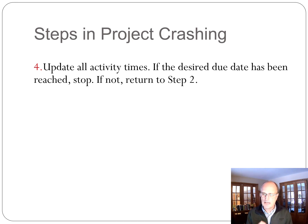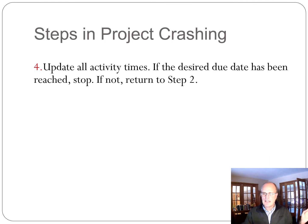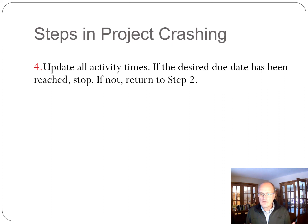The last point: sometimes students struggle with the concept that you need to shorten two activities because there are two different critical paths, yet the whole project only shortens by one day. You shorten this activity by a day and that activity by a day, but it still only shortens the project by one day because there is more than one critical path. Those are the tricks to watch out for. Look at the example I post as well — I think it'll make things much clearer. If you try it a couple of times, it intuitively makes sense and can be relatively straightforward. Good luck with project crashing.